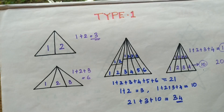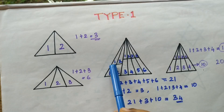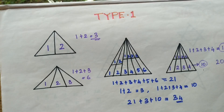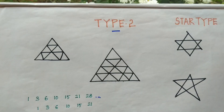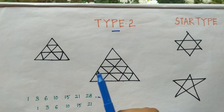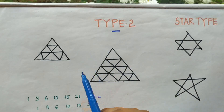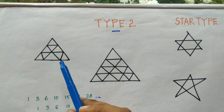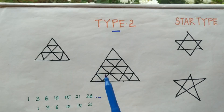This is how we find the number of triangles for sums where all triangles have the same base. Let's move on to the next type — Type 2. This is a very important type, mostly asked in exams. Let's try to find the number of triangles using a trick.